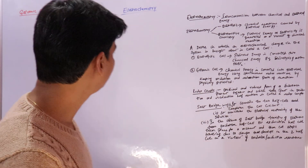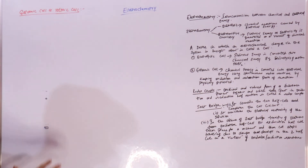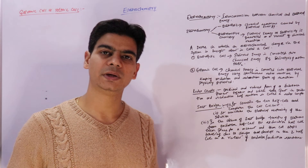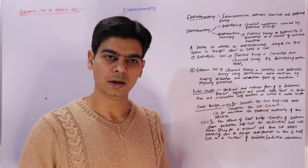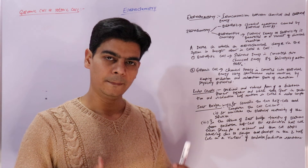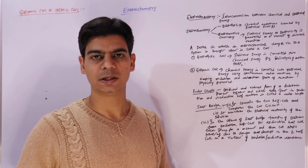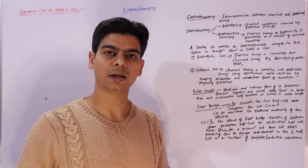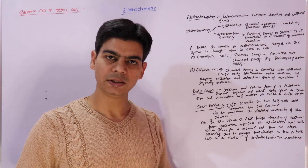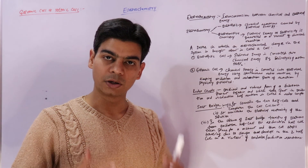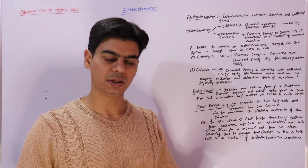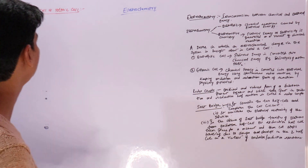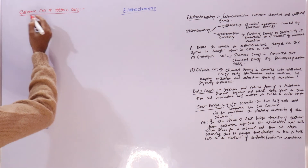In this video lecture we will understand in detail how a galvanic cell works and how the arrangement is done in a galvanic cell to convert the chemical energy of a spontaneous redox reaction into electrical energy. A galvanic cell converts chemical energy of a spontaneous redox reaction into electrical energy.